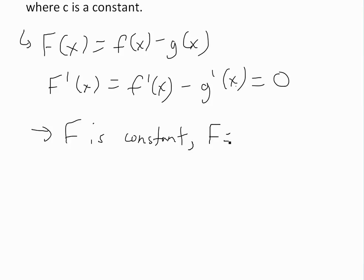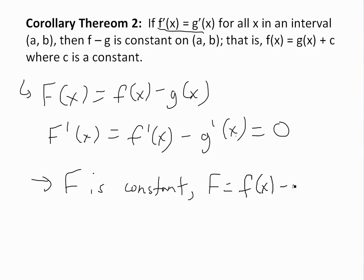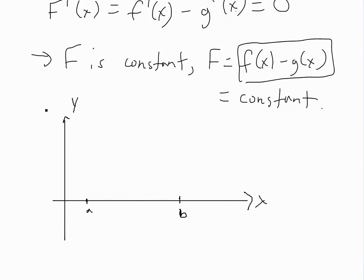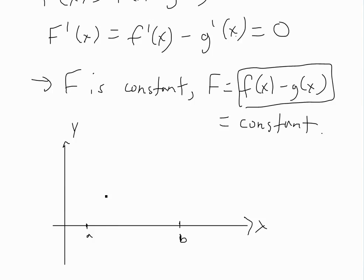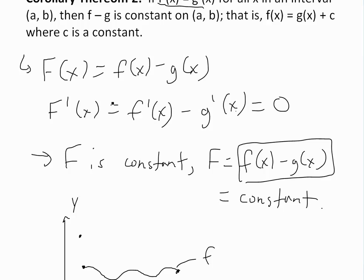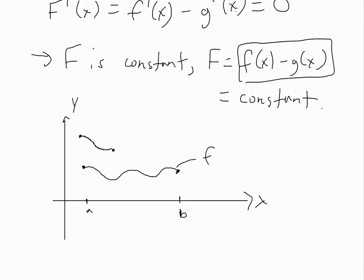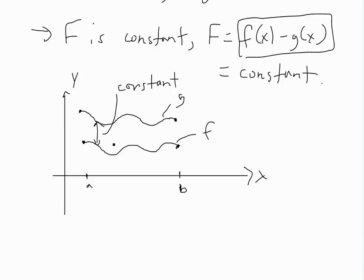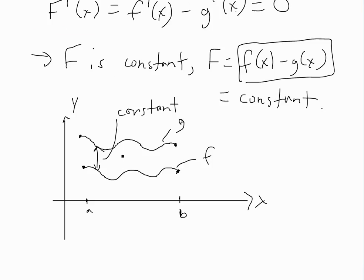F is constant, and we know that F equals f(x) minus g(x), so these two values differ by a constant. The way to understand this: if from a to b your starting point for f is here and follows some curve, and g starts at a different point but has the exact same derivative, then g follows the exact same shape. The difference f minus g — or g minus f — remains constant everywhere. So all these differences are constant.